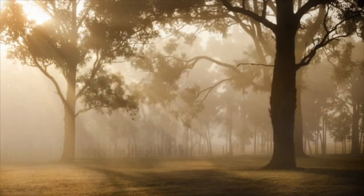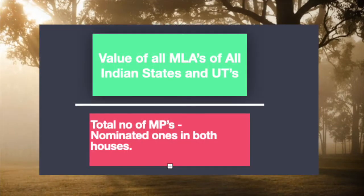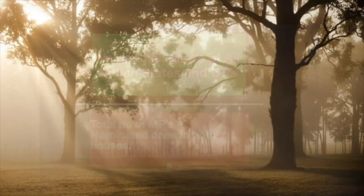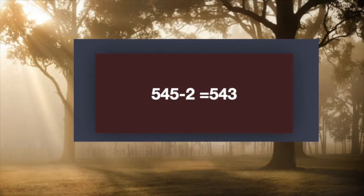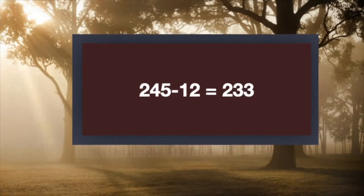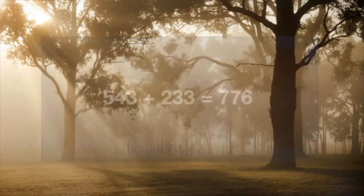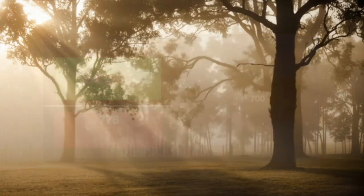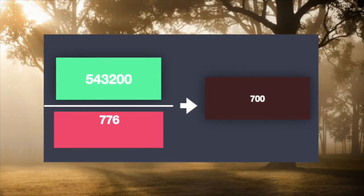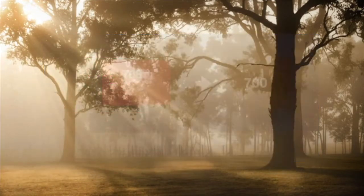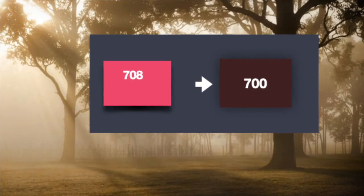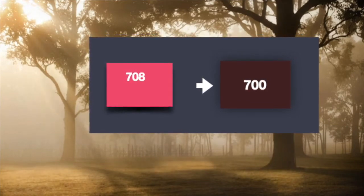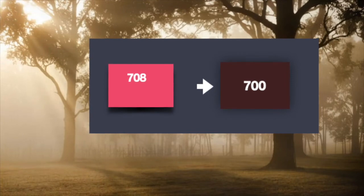To calculate the MP's vote value, divide the total value of all MLAs by the total number of MPs, excluding nominated ones from both houses. For Lok Sabha: 545 minus 2 equals 543. For Rajya Sabha: 245 minus 12 equals 233. Together, total elected MPs are 776. Therefore, 5 lakh 43,200 divided by 776 gives a value of 700 — the individual vote value of every MP. Earlier the value was 708, but after the J&K assembly was declared non-functioning, the value was reduced.